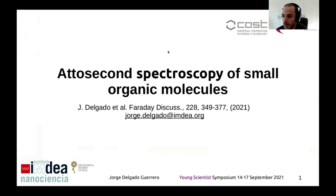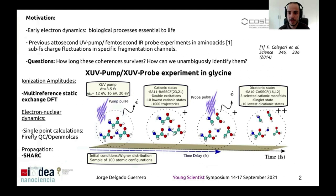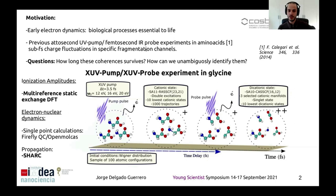I'm going to present this paper published recently, called second spectroscopy of small organic molecules. The motivation is to study charge migration phenomena. Our starting point is previous attosecond XUV pump, femtosecond ARPROF experiments, in which femtosecond electronic dynamics were observed that could be associated with specific ionization channels. However, the theory for these experiments was performed considering fixed nuclear approximations. The question of how long these coherences may survive, or if we can unambiguously identify them if we include nuclear movement in our calculations, is still open.